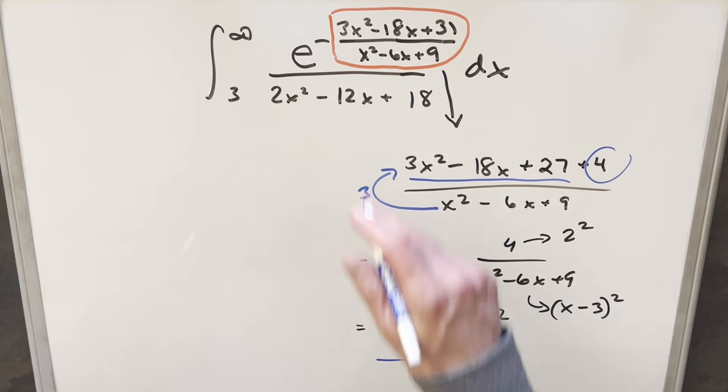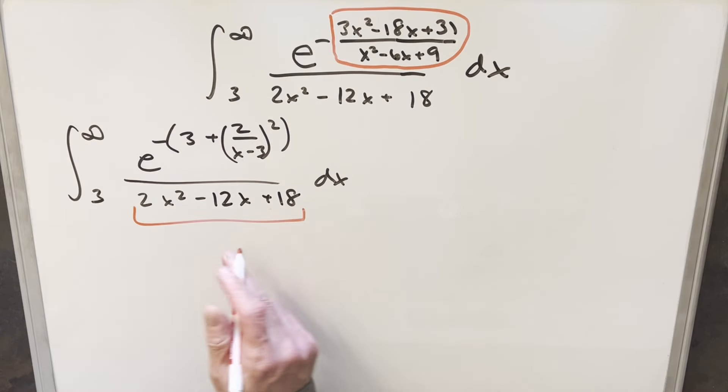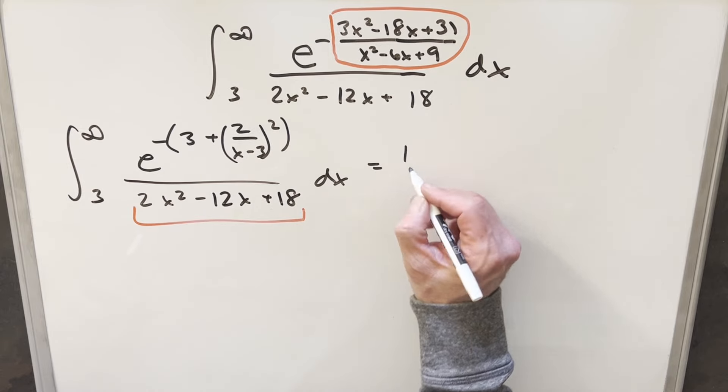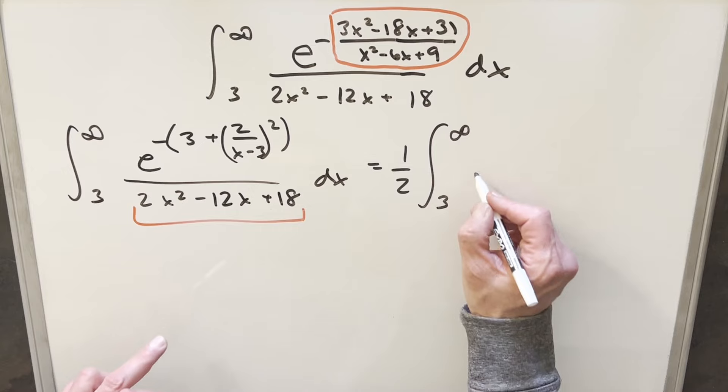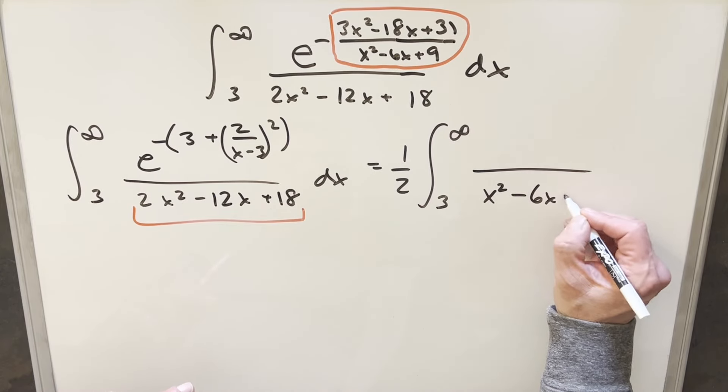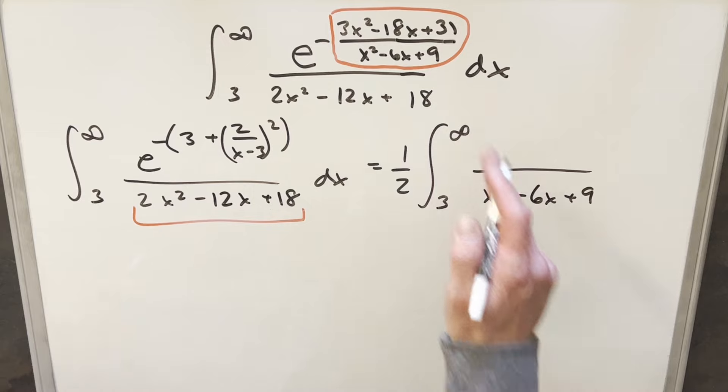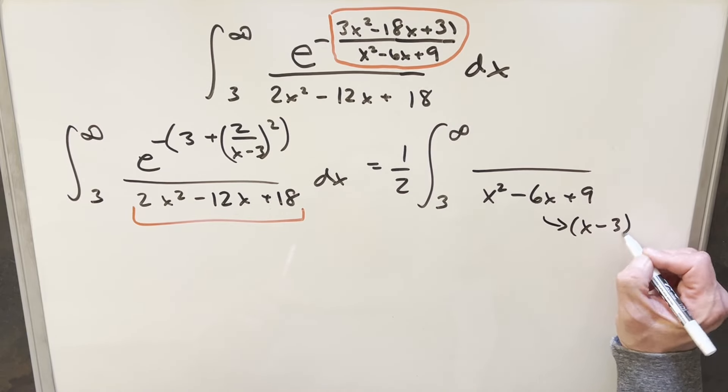So now we'll just take this and we'll put it back in our exponent. But now from here, I can still do some more algebra because I can factor a two out of this. And when I do that, I'll bring that up front of our integral as one half. But then when we do that, this here is going to become just X squared minus six X plus nine. That's the same thing we had over here. So this is actually the same thing as X minus three squared.